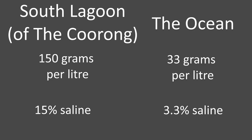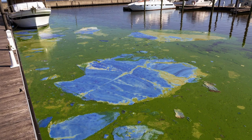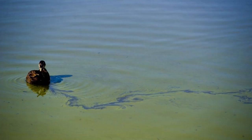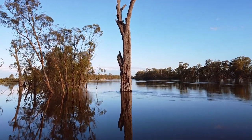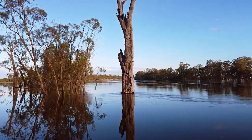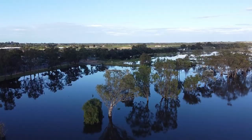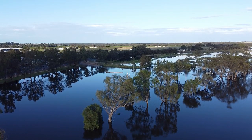As a result of this hypersalinity, blue-green algae now grows prolifically in the Coorong. Blue-green algae is poisonous to a lot of the local wildlife and uses up vital nutrients in the soil. When you visit the Coorong, you will probably notice an unpleasant smell — that is the smell of the blue-green algae.